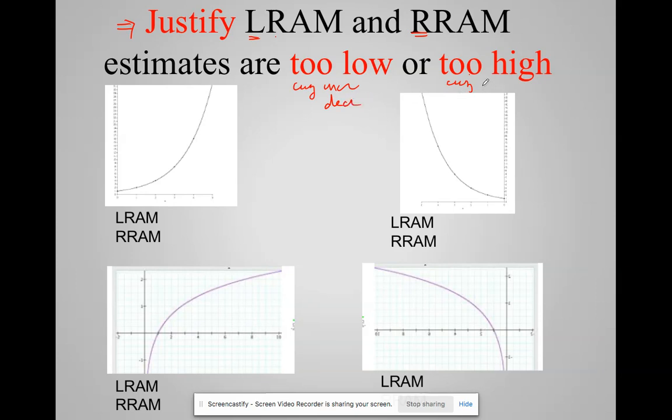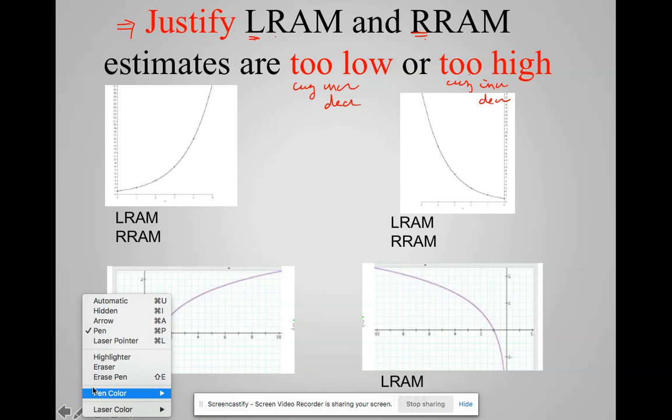So if you are not sure, take a guess. Anytime you are doing LRAM or RRAM approximations, you can justify whether your estimate is too low or too high by simply stating whether your function increases or decreases over the interval. So hopefully that makes intuitive sense.